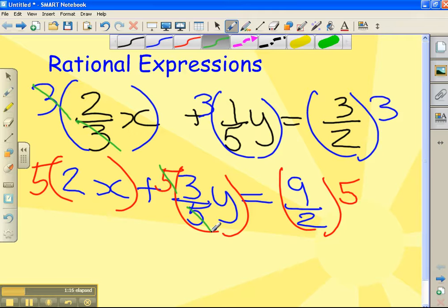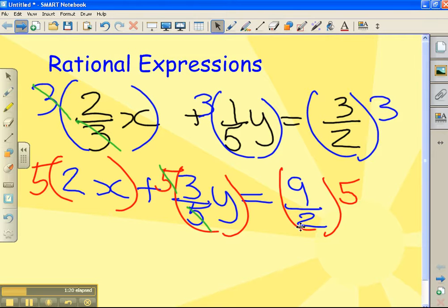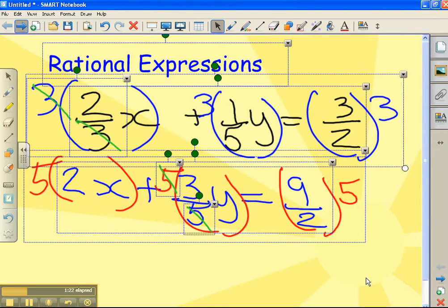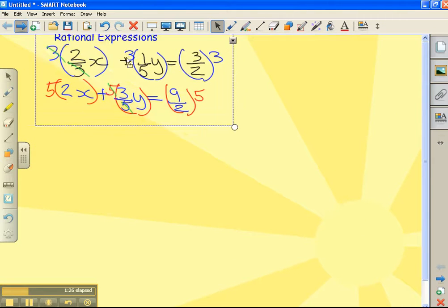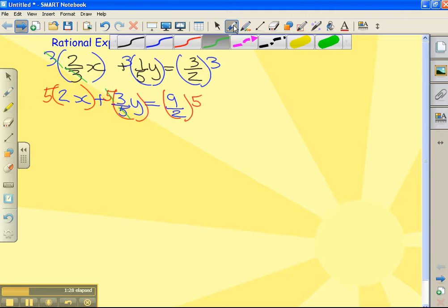So now I have 5 times 2 is 10x plus 3y equals 5 times 9 is 45 over 2.